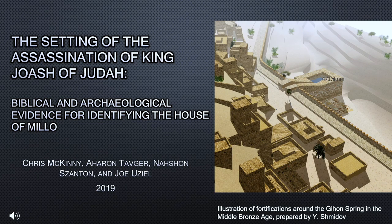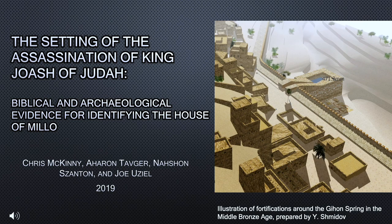Excavations in the City of David, with accompanying radiocarbon analyses, have revealed a complex sequence for the construction of the Spring Tower, which is situated above and around the Gihon Spring. The radiocarbon dates indicate that the Spring Tower was either constructed in the late 9th century BCE, or was substantially retrofitted during the late 9th century BCE.